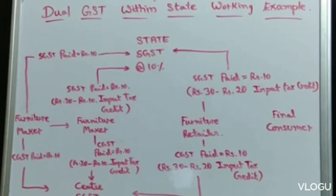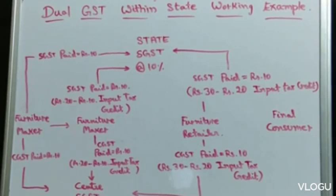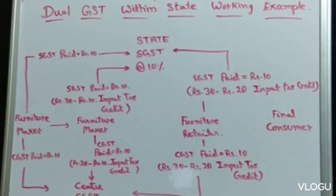Here you can see on the board: 10% SGST and 10% CGST is applied on the goods. GST is applied on the invoice. According to tax invoice A, the cost of goods is rupees 100. SGST and CGST at 10% each — on 100 it will be 20 rupees GST.